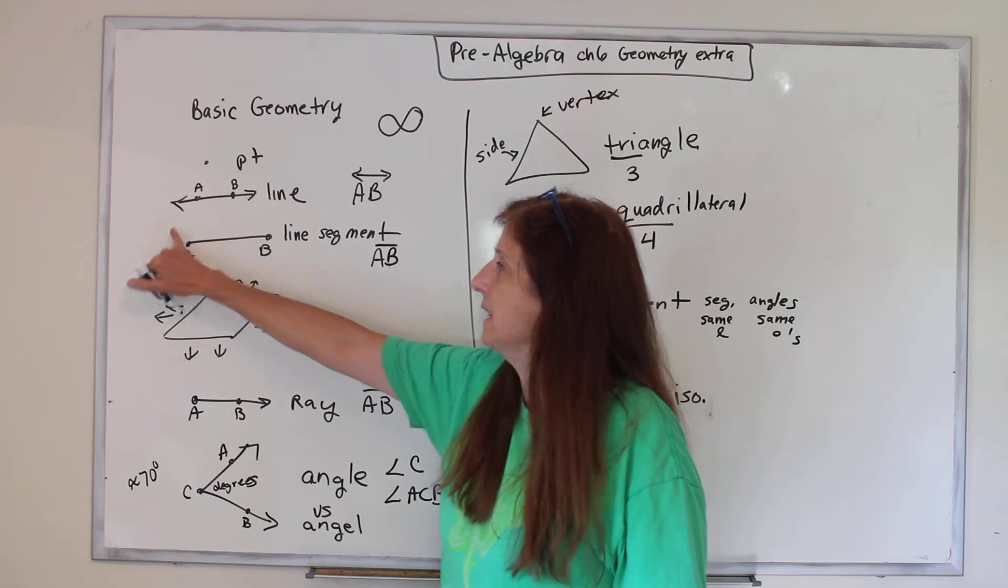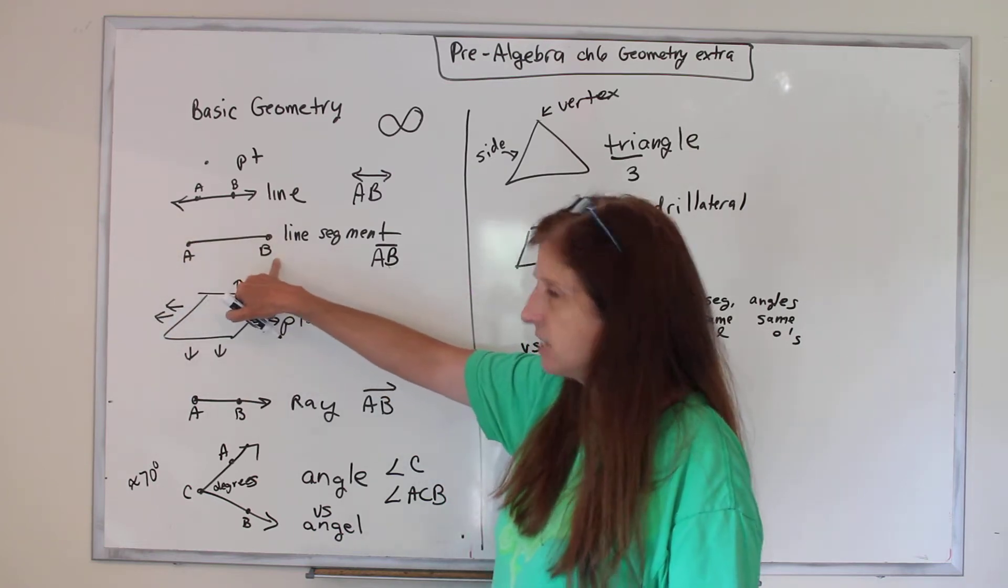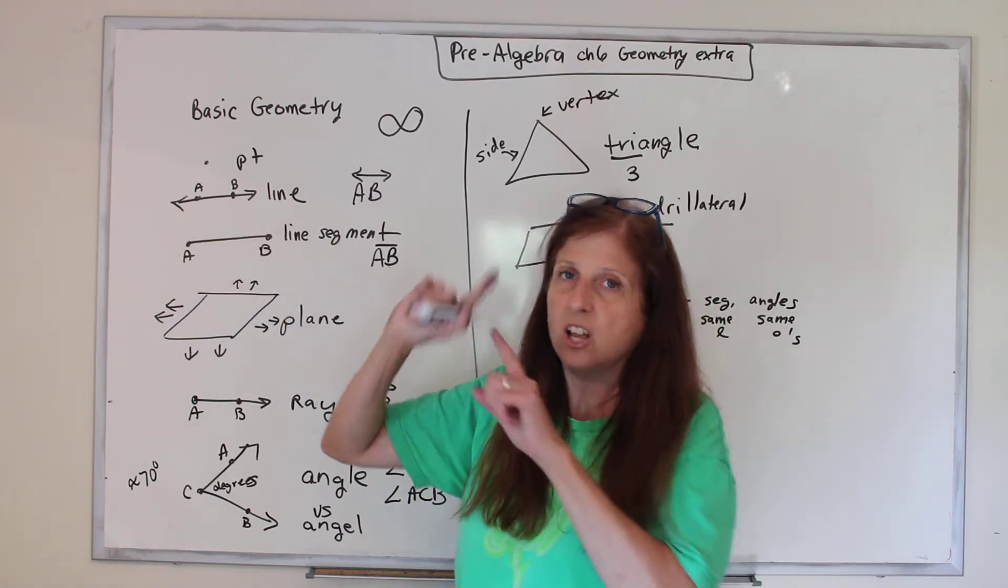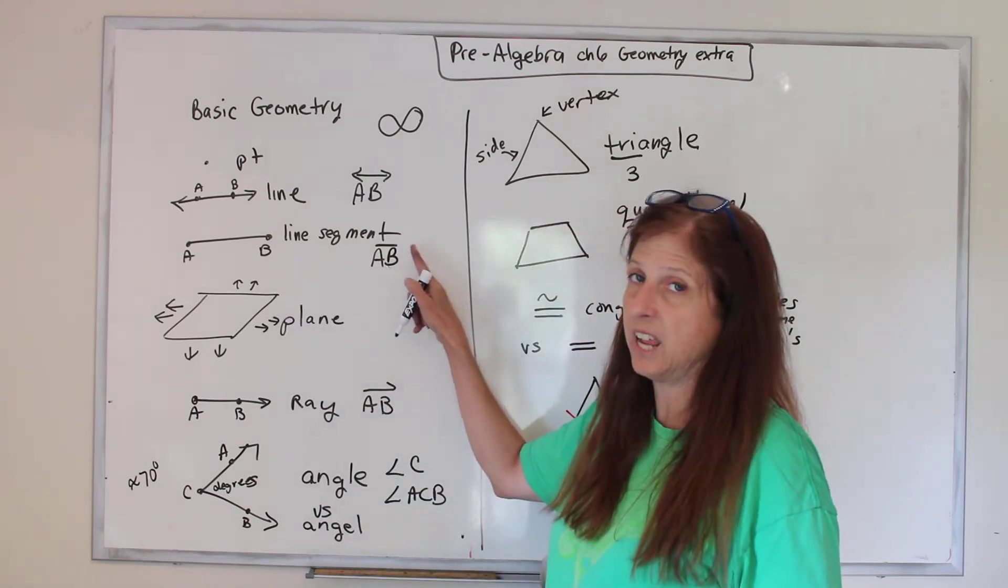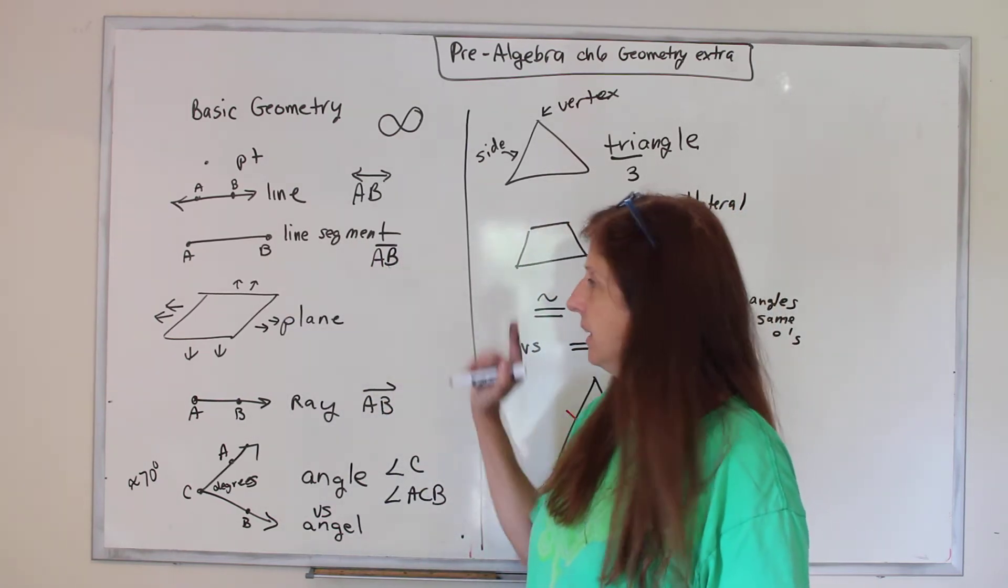This is a line segment. It stops at A and stops at B. It's just this, no infinity. And how you write it is AB with just a line, no arrows on it.